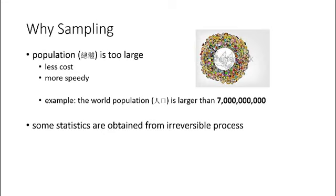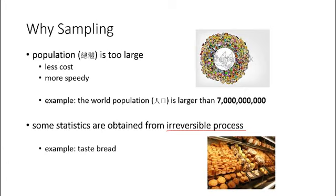Another reason why we need sampling is that some statistics are obtained through irreversible process. Here, by irreversible process, I refer to that if we investigate into something, the object that is investigated will become useless because of our investigation. A simple example is that we want to know how delicious the bread in the bakery tastes. Nobody will be allowed to taste all the bread in the bakery. Even if someone is allowed to do so, I believe he will not be able to eat up all the bread. In fact, there's no need to test all. If we want to know how the bread tastes, testing some of them will be okay. This is another example of sampling.